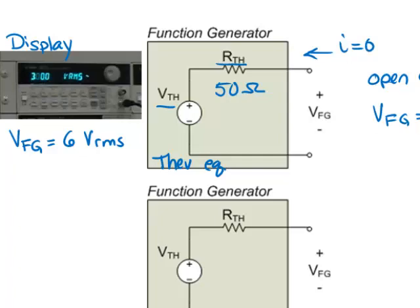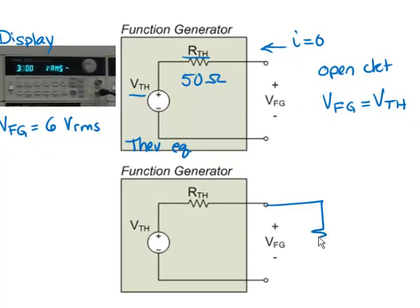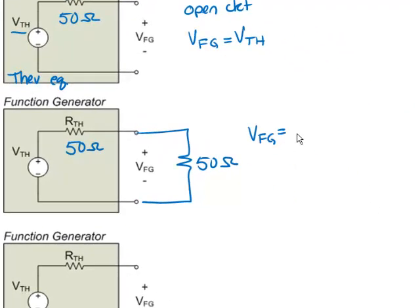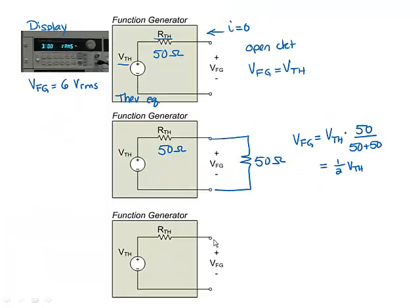Now in this next case, let's assume that the load is matching the internal resistance. In other words, if the internal resistance is 50 ohms, the output load would be 50 ohms. In this case, the output voltage VFG would be a fraction of the Thevenin voltage. We can use voltage divider to compute that the output voltage would be exactly one half the Thevenin equivalent voltage.